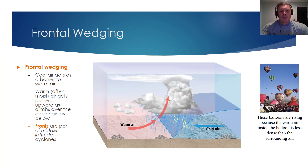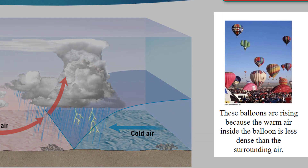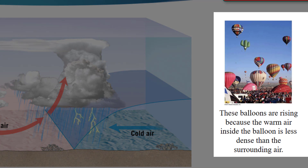The next process I'd like to overview that lifts air is especially important to us here in the Midwest, and that's frontal wedging. It's very important to state that orographic lifting doesn't really apply to us here in the Midwest, mainly because the prevailing winds come from the west and we're very far from the Rocky Mountains. But we do see a lot of rainfall, and that rainfall is because of frontal wedging. I want to return to a picture we looked at in the previous VODCAST — and maybe you're getting the hint that this is an important picture that may show up on a test or a quiz.